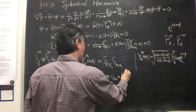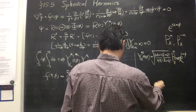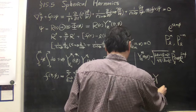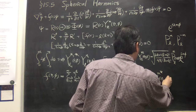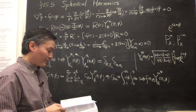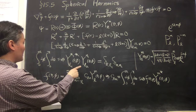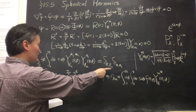The coefficients C_Lm are obtained by multiplying both sides by Y*_Lm and integrating over the full range of angles: C_Lm = integral from 0 to 2π dφ, integral from 0 to π sinθ dθ, of F(θ,φ) times Y*_Lm(θ,φ). This follows directly from the orthonormality condition, which picks out only the correct L, M terms.